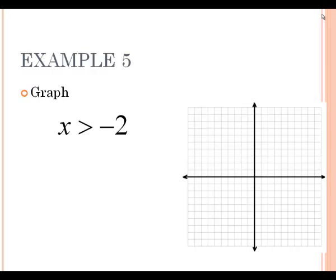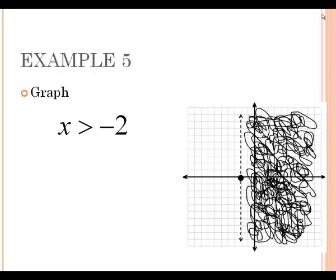Last example: x is greater than negative 2. Lines that start with x equals are vertical lines. You cannot graph vertical lines in your calculator — there's no x equals button, only y equals. So we graph this by hand. Find negative 2 on the x-axis and draw a dotted vertical line through that point, because there's no equals underneath our greater than. We're shading everything greater than, which here means to the right. You have to do vertical lines by hand; there's no way to graph them in the calculator.